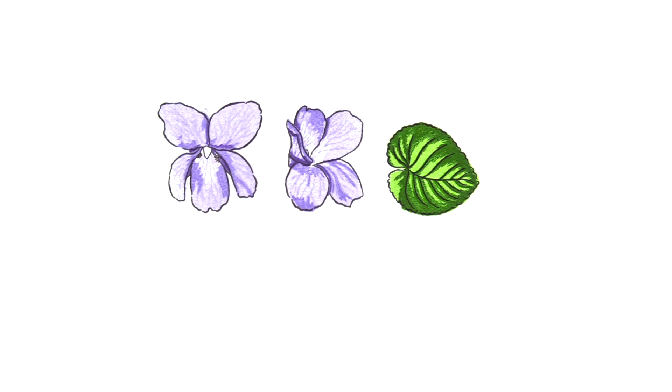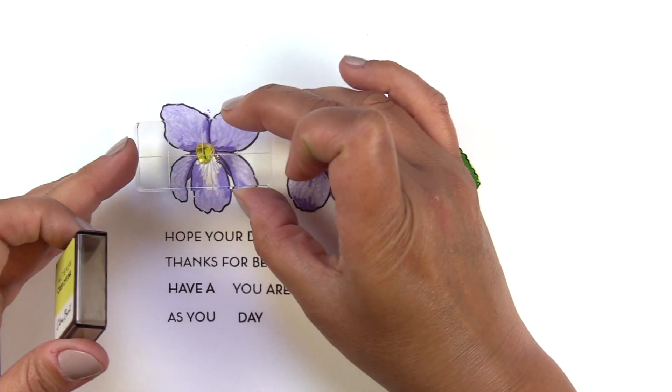And that's it. That is how you stamp the layer images from Build a Flower Sweet Violet.